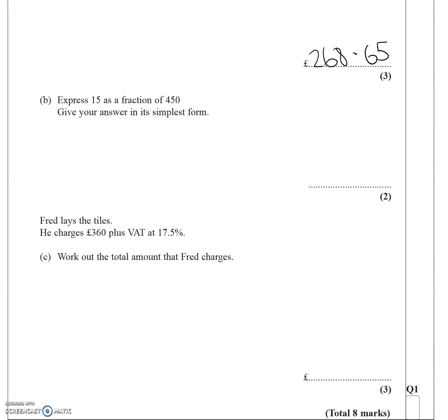Part B, express 15 as a fraction of 450 in its simplest form. So if we write 15 over 450, then we can simplify that because I can see straight away they both divide by 5.